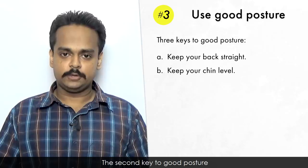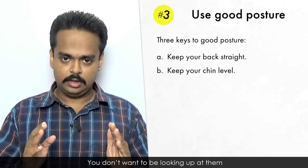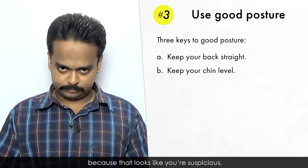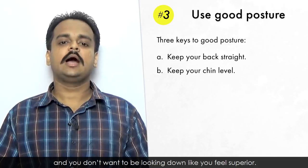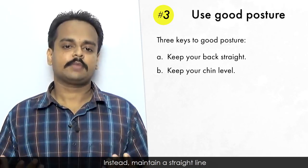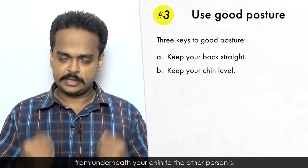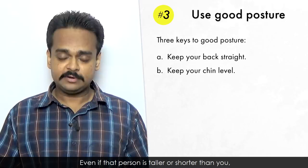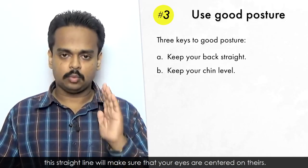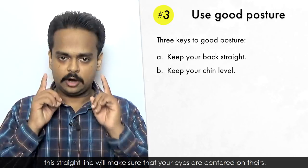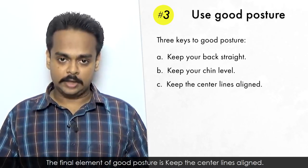The second key to good posture is keep your chin level with the other person's chin. You don't want to be looking up at them because that looks like you're suspicious. And you don't want to be looking down like you feel superior. Instead, maintain a straight line from underneath your chin to the other person's. Even if that person is taller or shorter than you, this straight line will make sure that your eyes are centered on theirs.